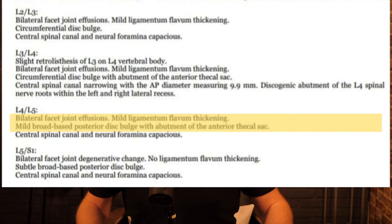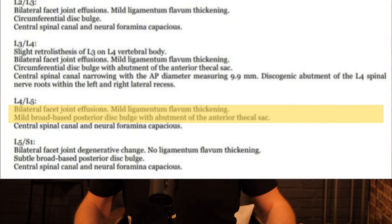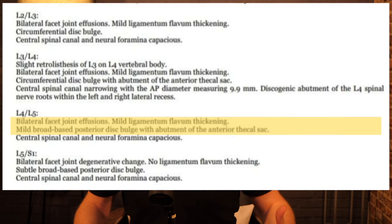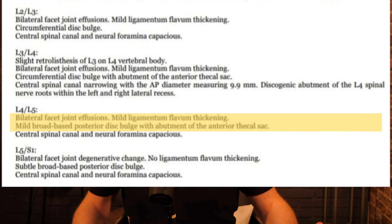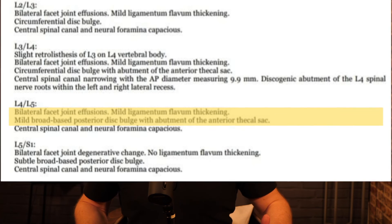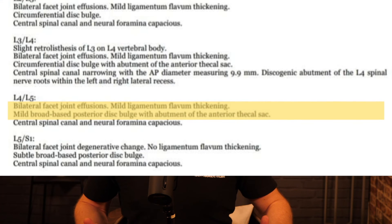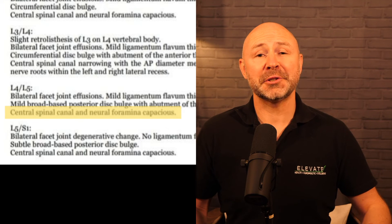At level L4-L5 we've got bilateral facet joint effusions and mild ligamentum flavum thickening, just as in the levels above. We also have a mild broad-based posterior disc bulge with abutment of the thecal sac — again, that pressure on the thecal sac could potentially cause problems or could be another incidental finding. The central spinal canal and neural foramina are capacious, where the left and right spinal nerves begin their journey.